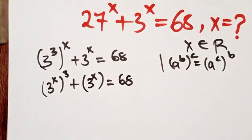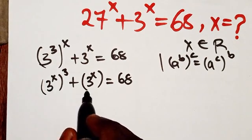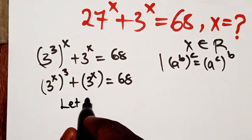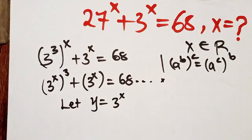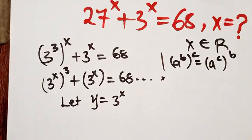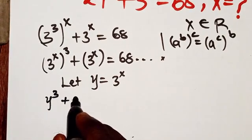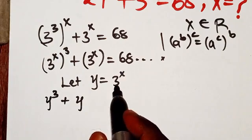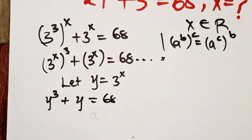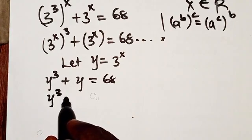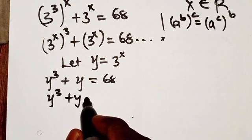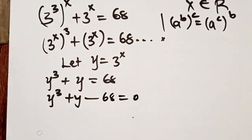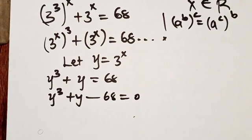You can see that we have 3^x appearing twice in the equation. So let Y = 3^x. Anywhere we see 3^x, we replace it with Y. This gives us Y^3 + Y = 68.